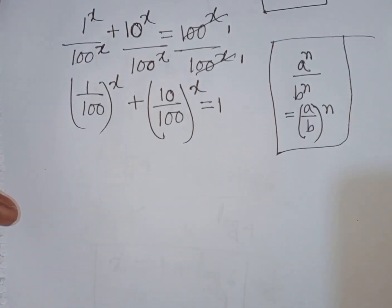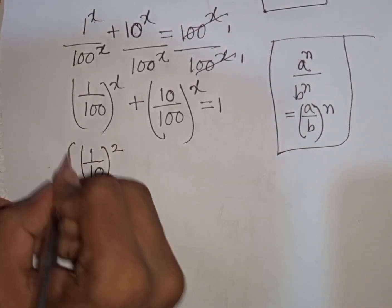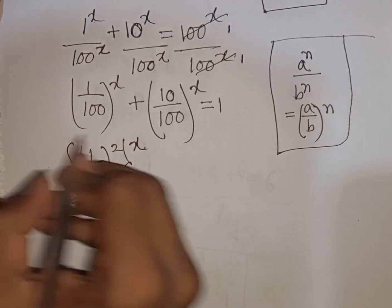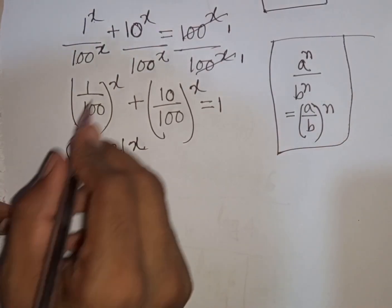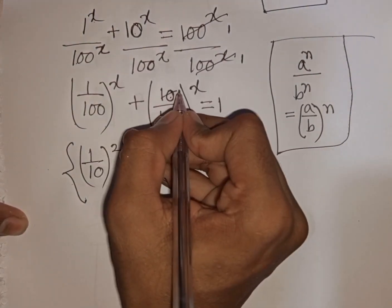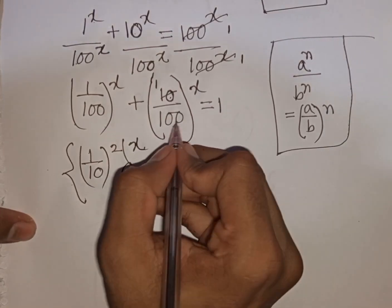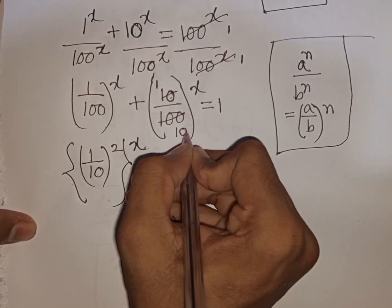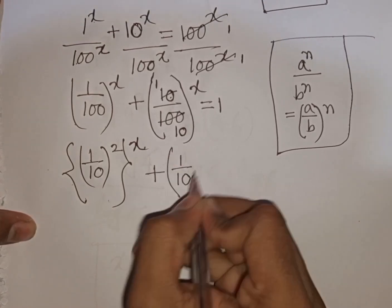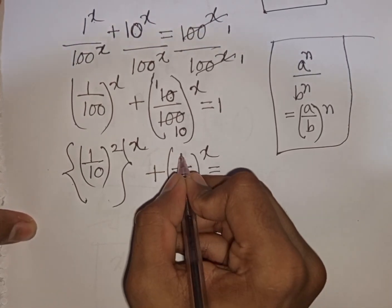Now 1 over 100 can be written as 1 over 10 bracket power 2, then the second bracket to the power x. For the second term, 10 simplifies by 10 to give 1, and 100 simplifies by 10 to give 10. So we have 1 over 10 bracket power x equal to 1.